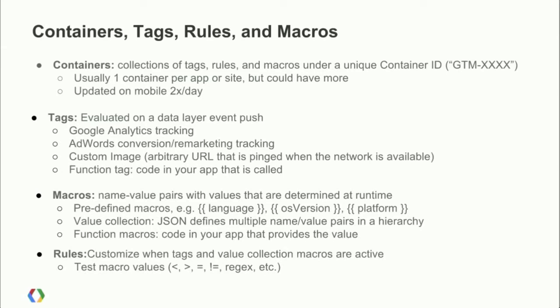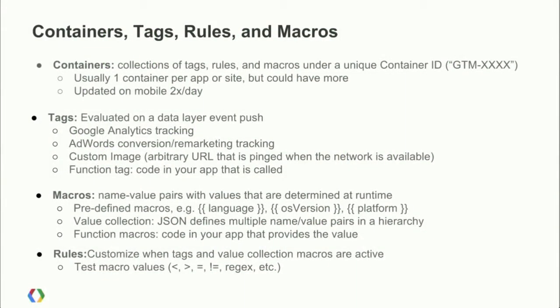When your application first starts, it checks what version of the container it has and how old it is, then talks to a back-end server to see whether there's a new version. If there is, it downloads it. If not, it waits 12 hours and tries again. Tags are evaluated when you push an event to the data layer — that's the only time tags ever fire. They only fire when you've got a rule that associates a particular tag with a particular event.